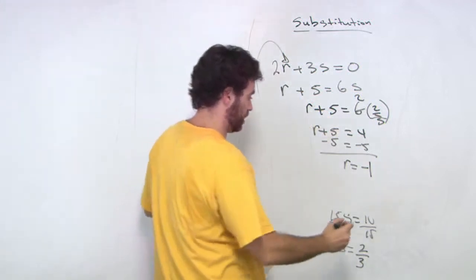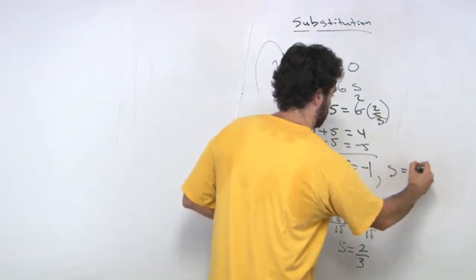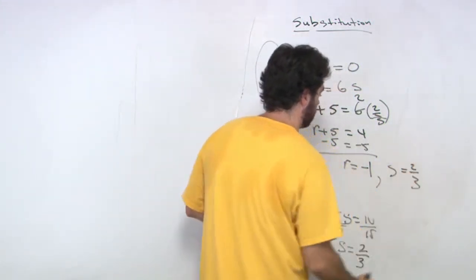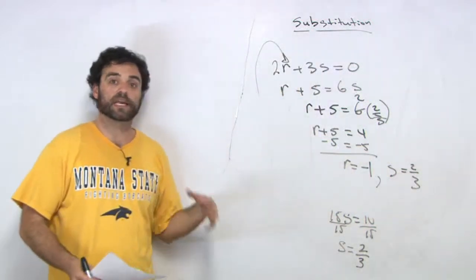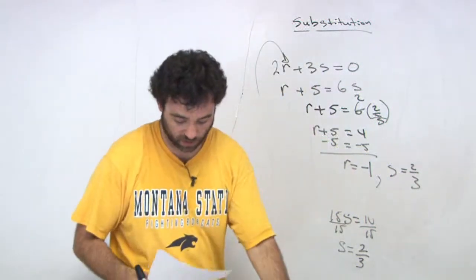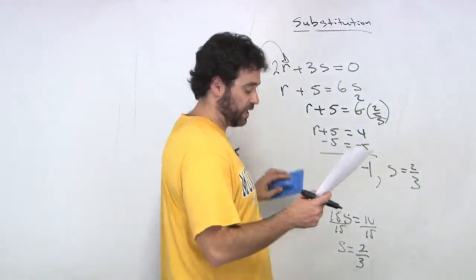r equals negative 1, and s was equal to 2 thirds, okay? So there's our solution set, and again, I leave it up to you guys to check that, to make sure that is the correct answer.